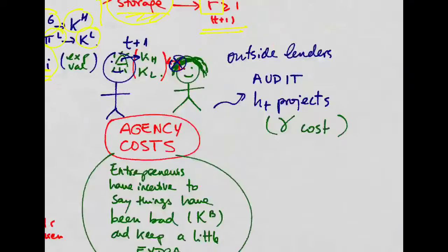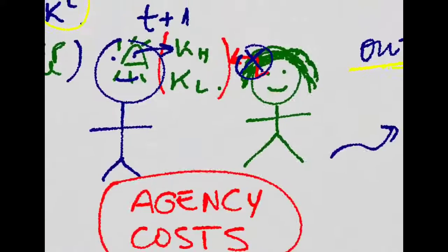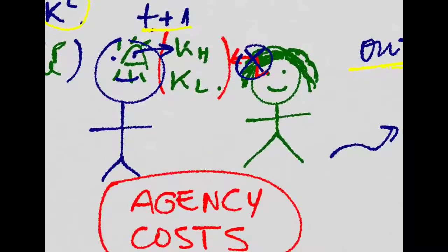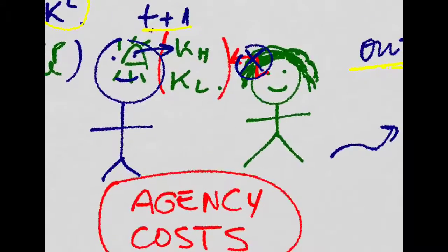Now, if these entrepreneurs don't have enough money to carry out their investments alone, they're going to have to ask for outside lending. The problem is that entrepreneurs are the only ones who are going to see what value of capital ends up being realized. Either is it going to be good, or is it going to be bad.